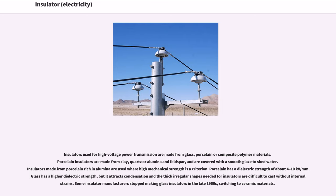Porcelain has a dielectric strength of about 4 to 10 kilovolts per mm. Glass has a higher dielectric strength, but it attracts condensation and the thick irregular shapes needed for insulators are difficult to cast without internal strains. Some insulator manufacturers stopped making glass insulators in the late 1960s, switching to ceramic materials.